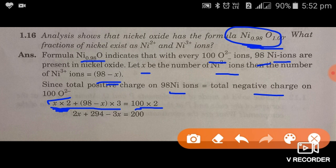And for the Ni3+, the Ni3+ is 98 minus X. Their valency is 3. Therefore total positive charge due to that will be this much. Now add both positive charges. That should be equal to total negative charge.